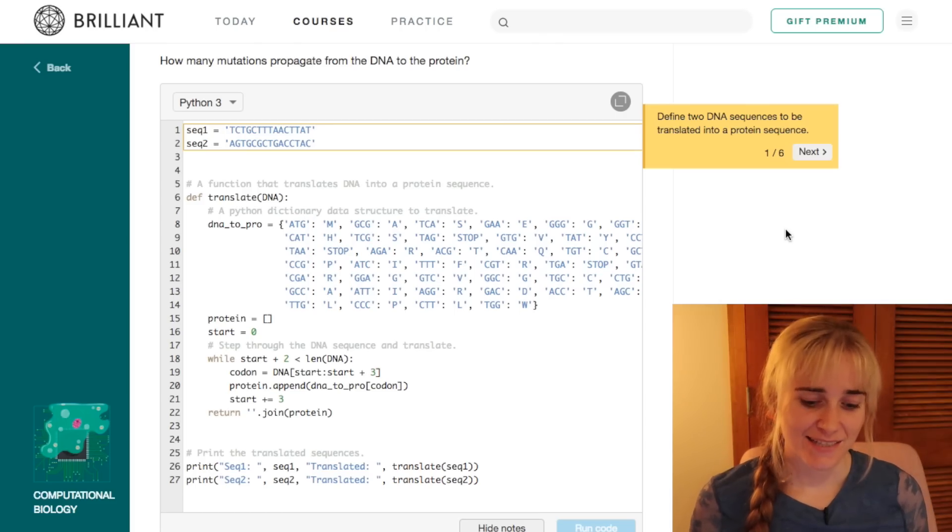This code is going to replicate the biological process of translation which reads DNA three letters at a time. Each three letters corresponds to an amino acid, and we string all these amino acids together to make up our protein.